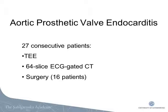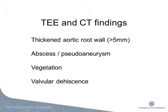Sixteen patients had surgery. The thickness of the aortic root wall was evaluated, where a thickened wall is known from TEE as an early sign of aortic root infection. We studied the presence of abscesses, pseudoaneurysms — defined as abscesses that were drained into the aorta or the left ventricle — vegetations, and signs of valvular dehiscence.